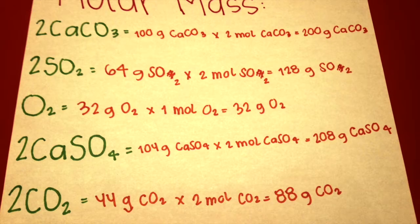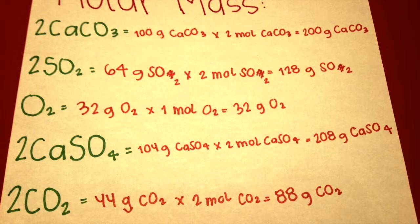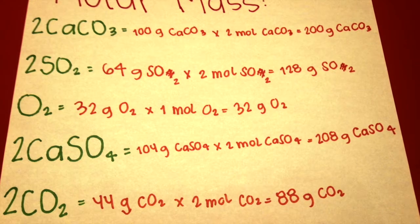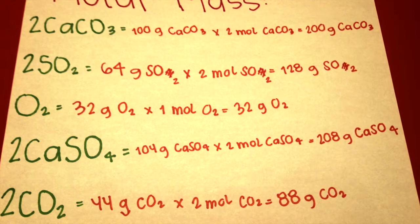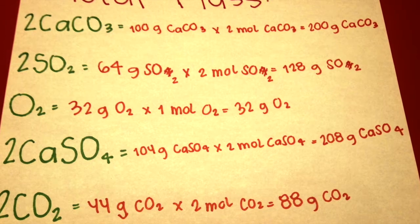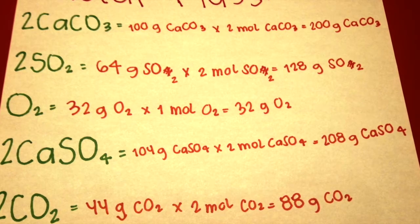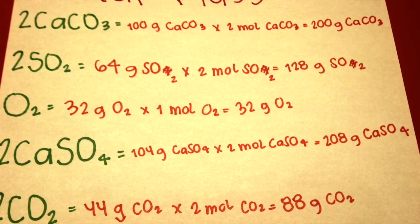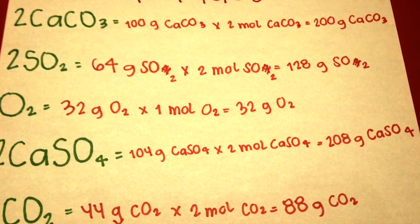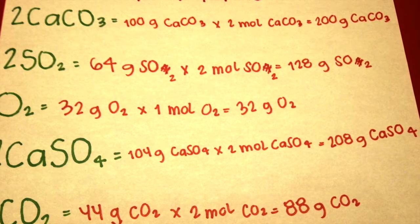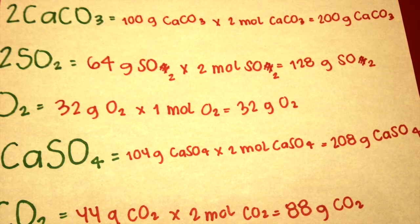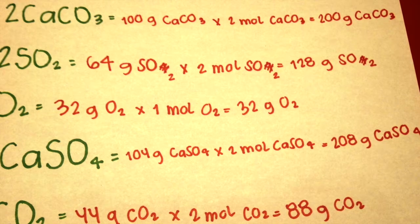Same as in the first problem, I calculated the molar mass of the atoms and molecules in the reaction by multiplying their mass times the number of moles in the reaction. The answers were: 2 moles of calcium carbonate equal 200 grams; 2 moles of sulfurous oxide equal 128 grams; 2 moles of oxygen equal 32 grams; 2 moles of calcium sulfate equal 208 grams; and 2 moles of carbon dioxide equal 88 grams.